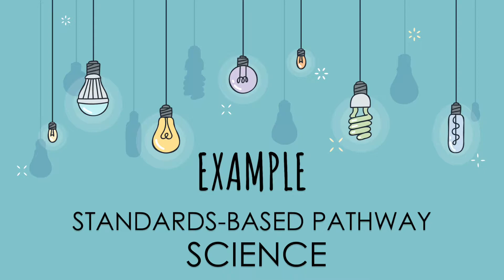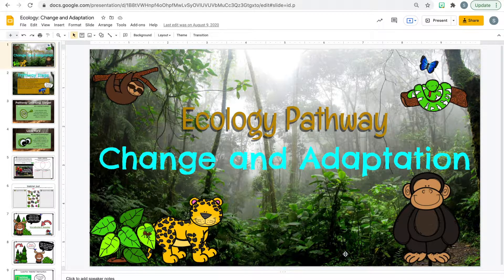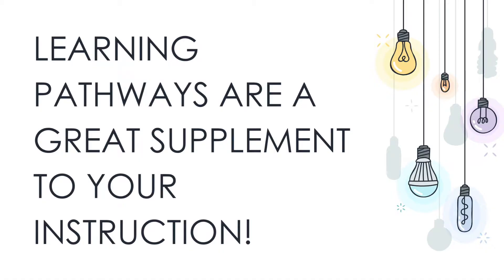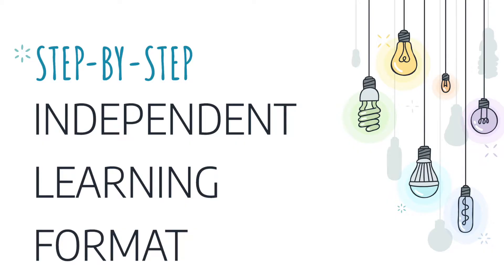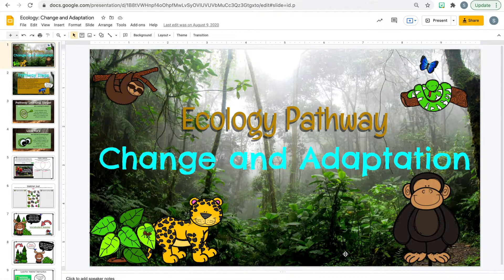So let's get started by exploring an example together. The example that we're going to look at today is a pathway that I created for science. I really loved creating pathways for science and social studies because I found that there was just never enough time in my schedule to do them to the degree they deserved. So I created pathways based on the science and social studies standards to supplement my instruction, and the kids could do this independently from start to finish.